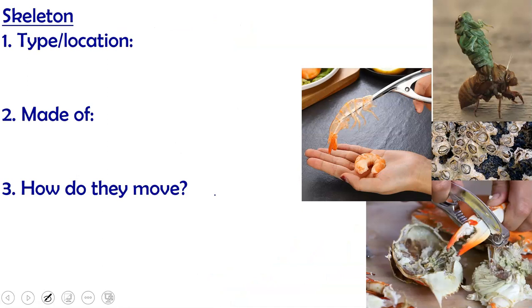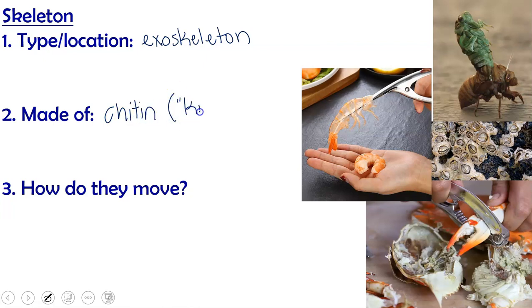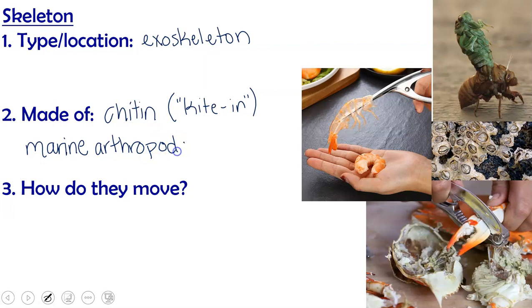As for their skeleton, arthropods have an exoskeleton on the outside of their body, not the inside. It is made of chitin — pronounced 'kite-in' — which is a fairly proteinaceous substance. If an arthropod is marine, it may also have some calcium carbonate to strengthen the shell. Barnacles are a good example of an arthropod that has calcium carbonate in their shell.